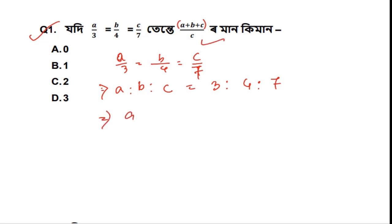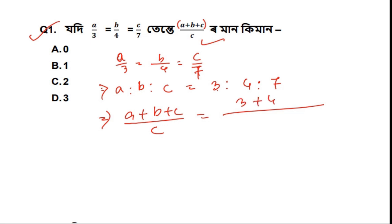We will write A plus B plus C divided by C. A is 3, and 3 is to 4 is to 7. So 3 plus 4 plus 7 equals 14, divided by 7 gives us 2.